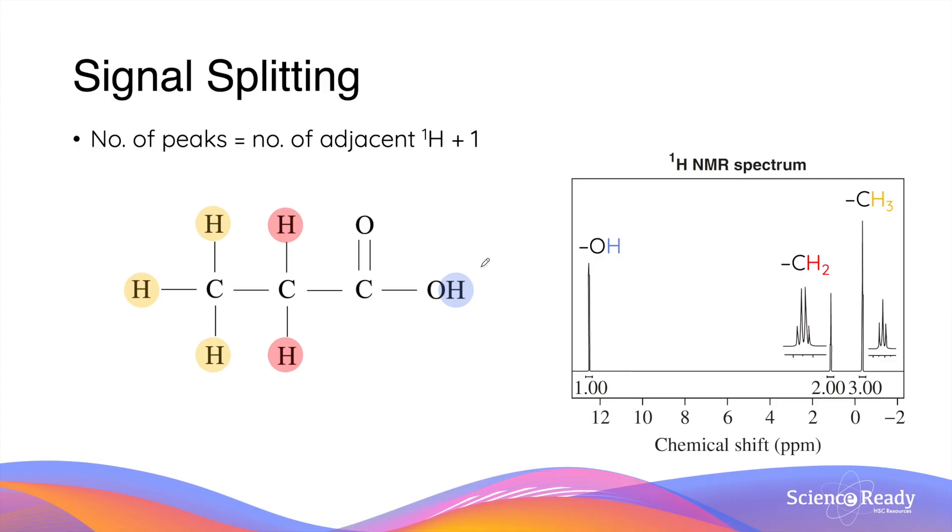Let's look at signal splitting using the example of propanoic acid. In propanoic acid, there are three different chemical environments for the hydrogen atoms, and these are labeled with blue, red, and yellow.